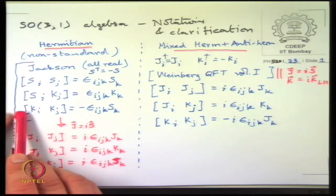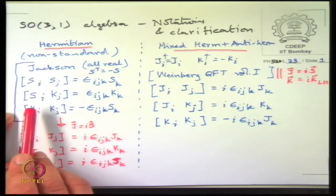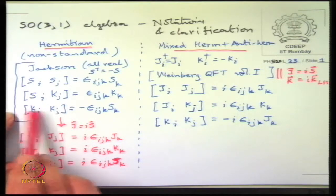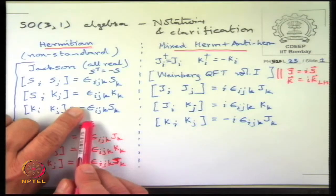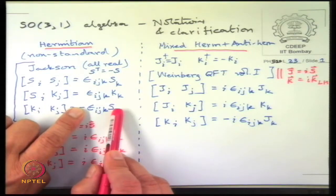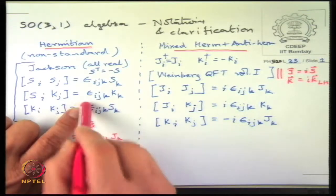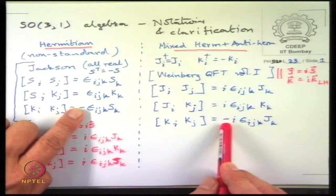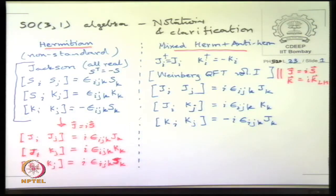If you supply an overall minus sign, that will make it i times i, and then put the minus sign here which will remove this minus sign. But then you need to put an i to make this into J, which will require putting minus i in front. So this and this tally, and this is the notation we will follow.